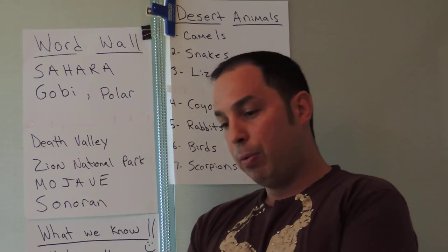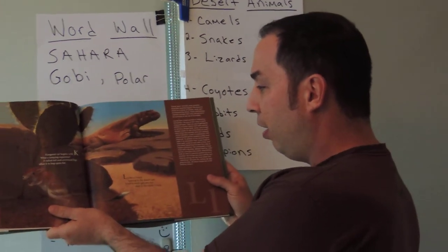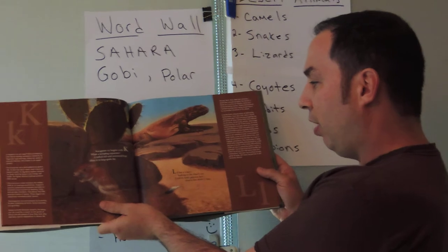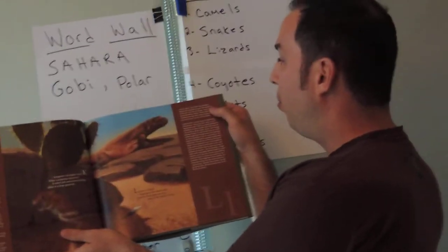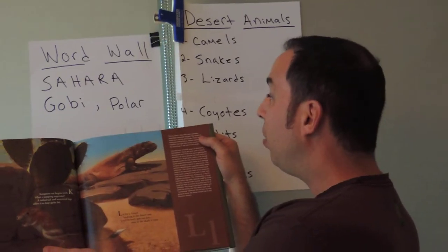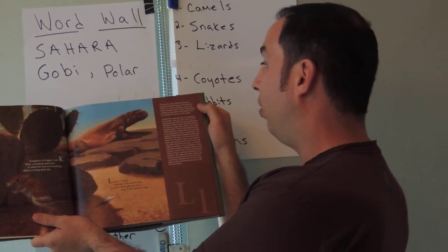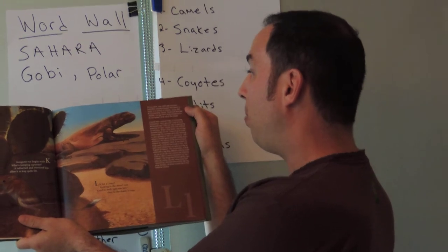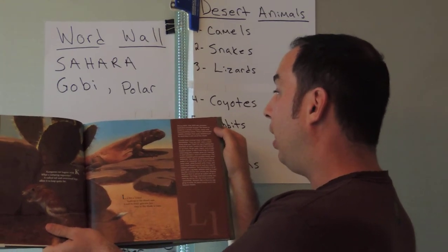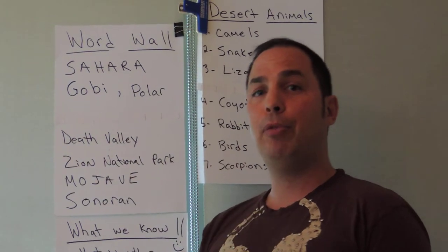'L is for Lizard' — basking in the desert sun until its body gets too hot, then to the shade it runs. The thorny devil, the Gila monster, and the Australian bearded dragon — the desert is home to a variety of lizards, many with fierce-sounding names. These cold-blooded reptiles manage their body temperature by scurrying in and out of the shade.